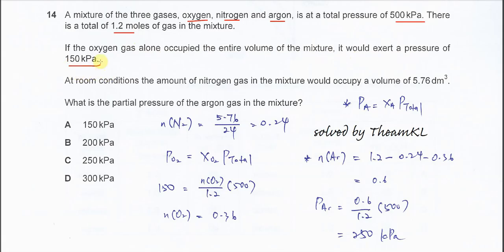First, we need to understand the total pressure is from the sum of partial pressures of oxygen, nitrogen, and argon. If it's just oxygen only, it will give 150, which means the remaining 350 in the mixture is from nitrogen and argon.